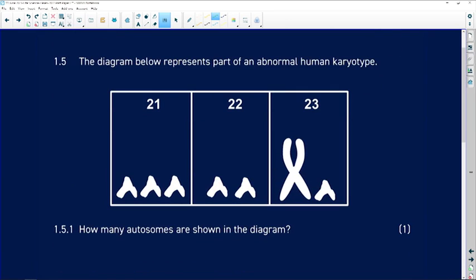Question 1.5. The diagram below represents part of an abnormal human karyotype.